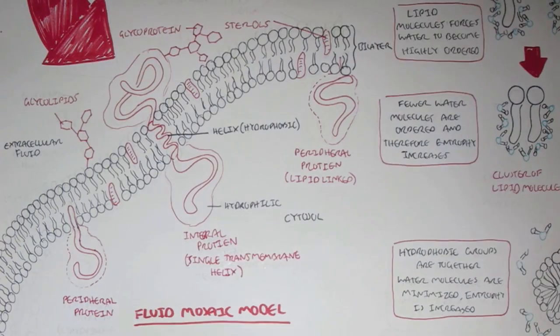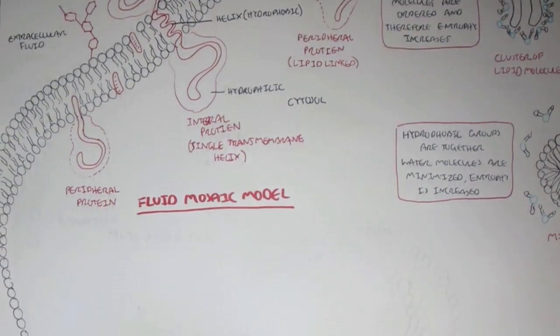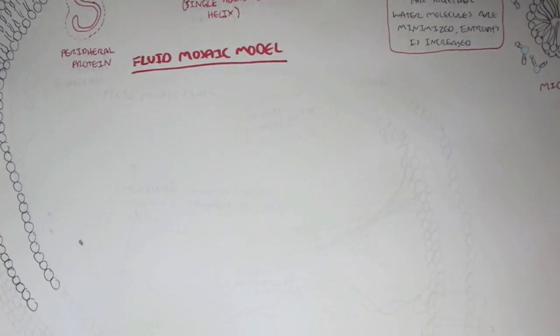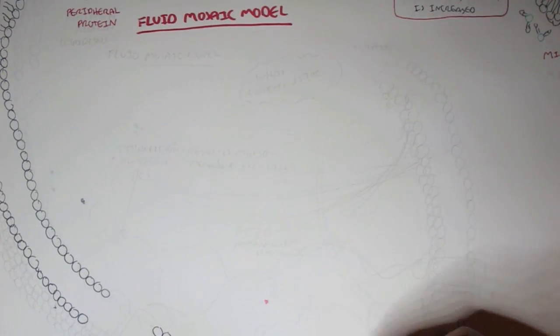We also have glycoproteins and glycolipids which are carbohydrates attached to proteins and lipids. So that's all we're going to talk about on the fluid mosaic model and we'll look at each of these structures more closely later on throughout this series.